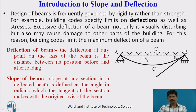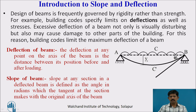Slope at any section in a deflected beam is defined as the angle in radians which the tangent at a section makes with the original axis of the beam. If I draw a tangent to this arc, I get the maximum theta at the support. This angle theta is the slope of the beam.